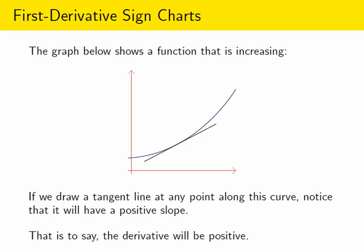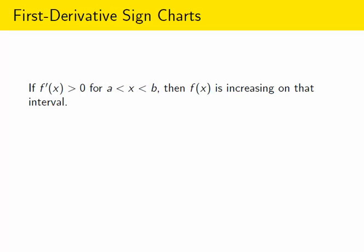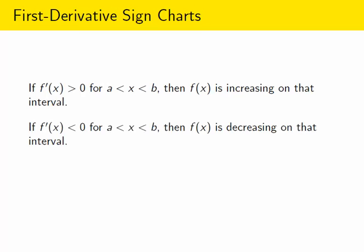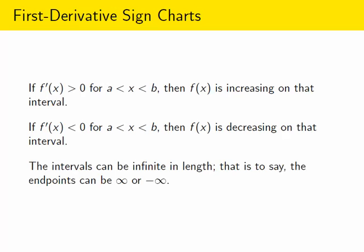We're going to use this observation in the reverse direction. If a function has a positive derivative, the function is increasing there. If the function has a negative derivative, the function is decreasing there. We can talk about this on intervals — for example, if a function has a positive derivative between 0 and 7, the function must be increasing throughout that interval. Intervals can be infinite in length, with endpoints of infinity or negative infinity.